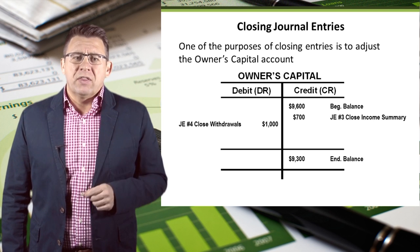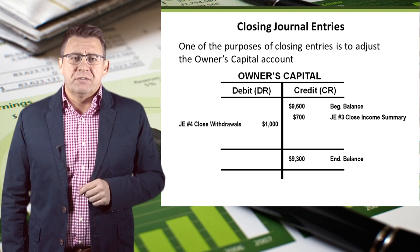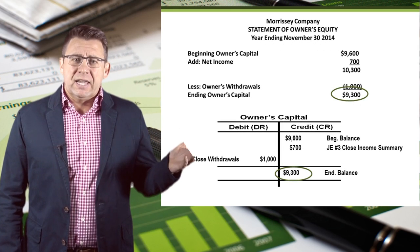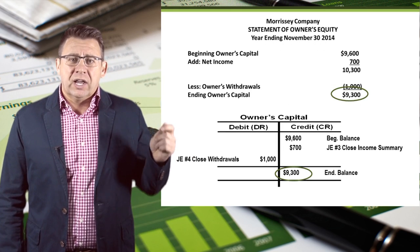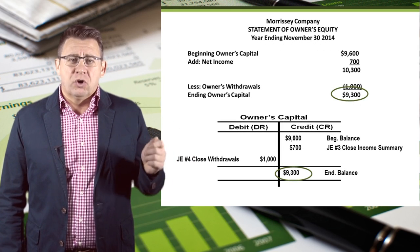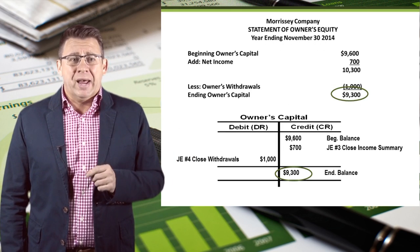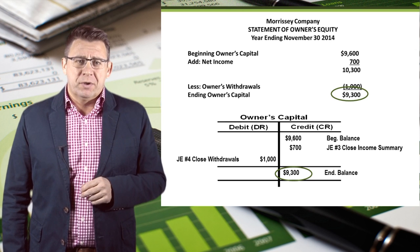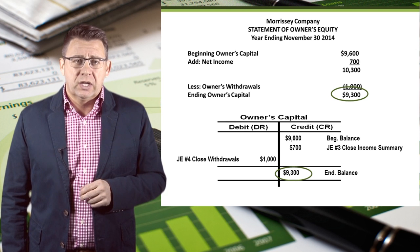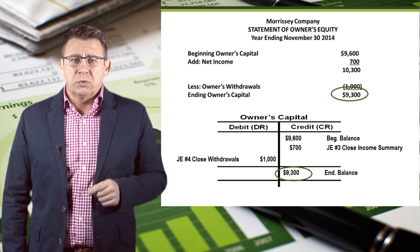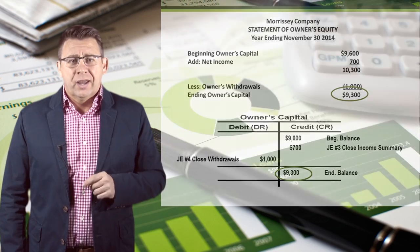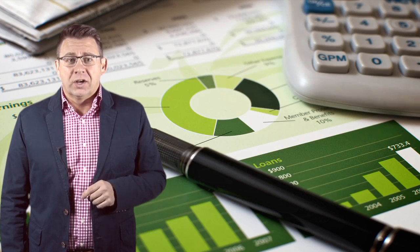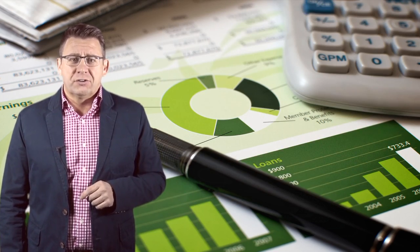Let's compare that to the statement of owner's equity. You can see now that our ledger balance for owner's capital matches what we reported on the statement of owner's equity. And that concludes this important video on closing journal entries.